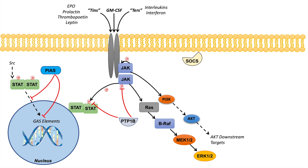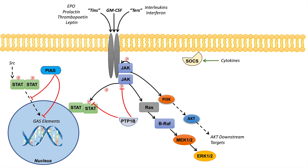The third family of regulators of the JAK-STAT pathway are the suppressors of cytokine signaling, or SOCS. These proteins are induced by cytokines, as opposed to protein tyrosine phosphatases and PIAS, which are always constitutively present in the cell and can regulate the JAK-STAT pathway quickly.